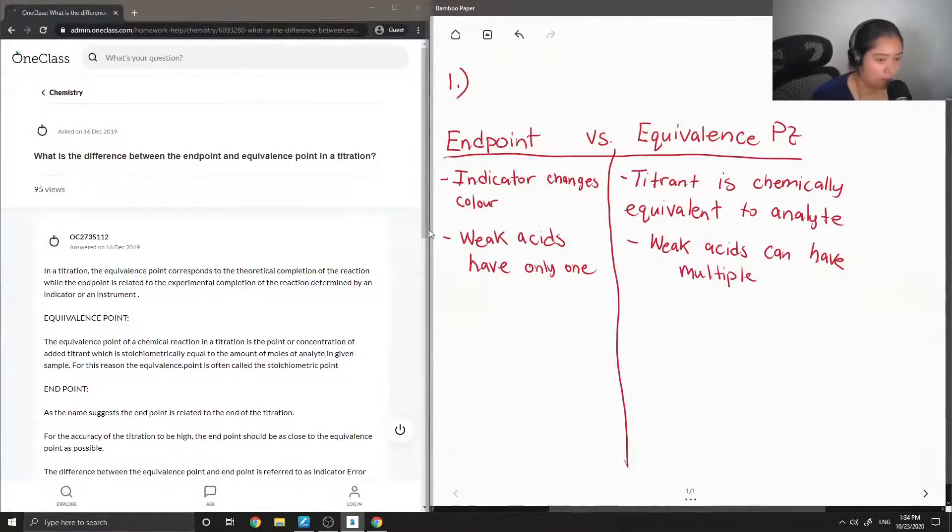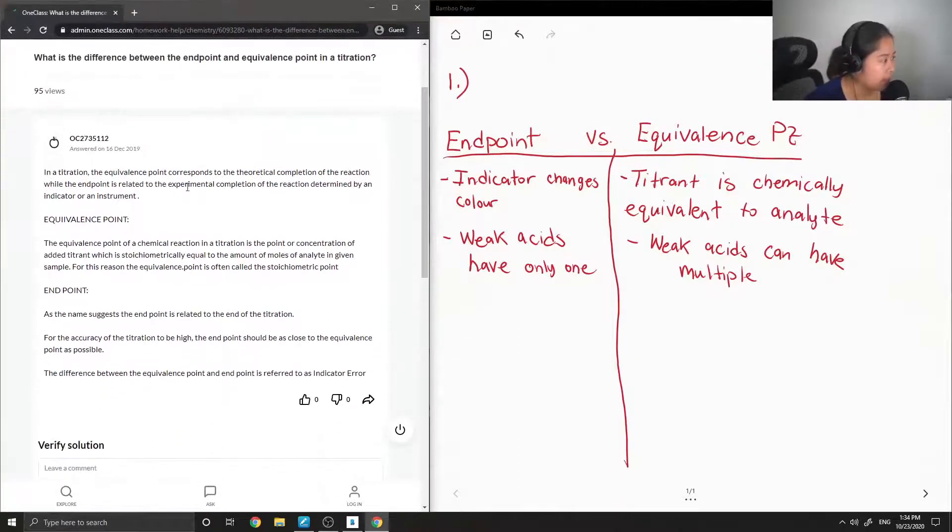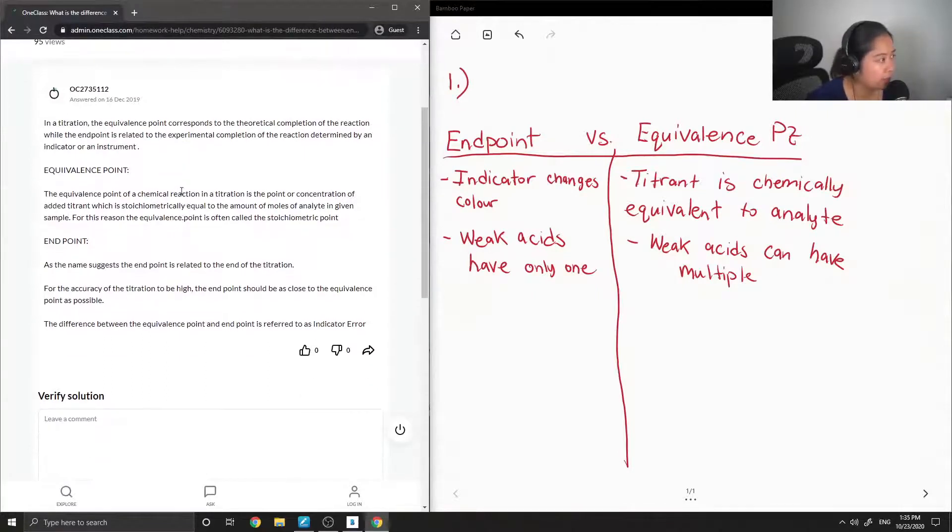Okay, so let's check out the answer from our junior tutor. In a titration, the equivalence point corresponds to the theoretical completion of the reaction, while the endpoint is related to the experimental completion of the reaction determined by an indicator or an instrument. That was a great answer.